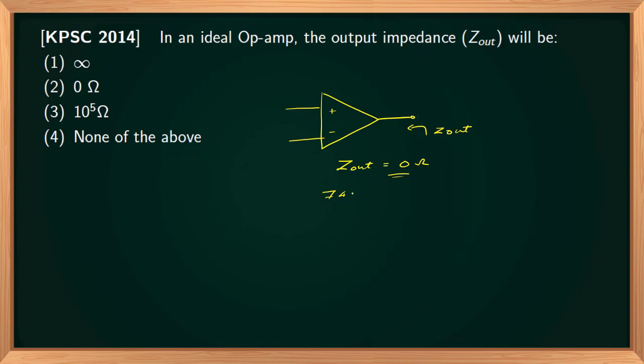For practical op-amp, for example 741 IC, IC 741, typical value is 72 ohms. The correct option will be Option 2, that is zero.